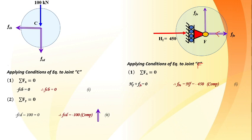At joint F: FFE = 450 kN compressive, and FFA = 0. We have now finished joints C and F with no unknowns remaining at these joints. We go back to the original truss figure and mark the found magnitudes and directions. Forces at opposite ends of each member are equal, opposite, and collinear.